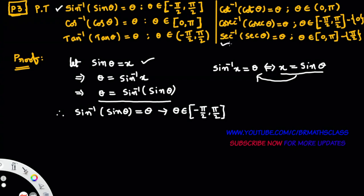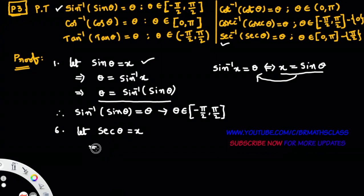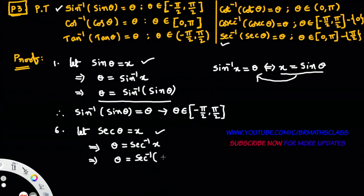I want to prove one more result: secant inverse of secant theta equals theta. This is the sixth result. To prove that, I'll take secant theta equals x. From the definition of inverse secant function, we can write that theta equals secant inverse of x. Now, what is x? X is secant theta. So in place of x, you write secant theta. We got that secant inverse of secant theta equals theta.